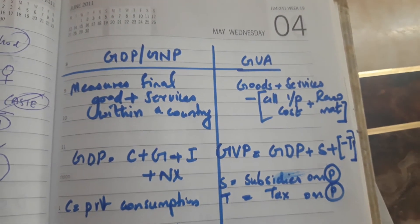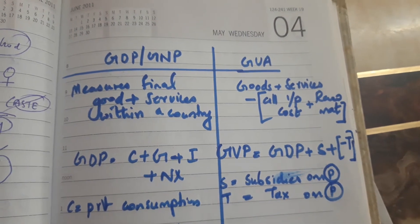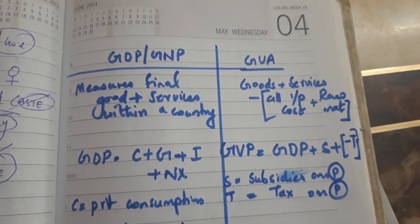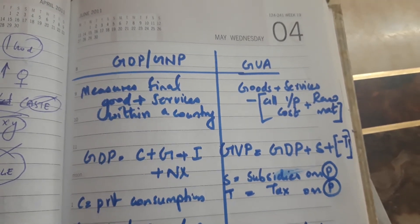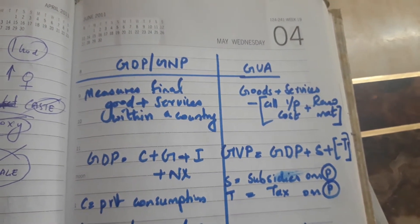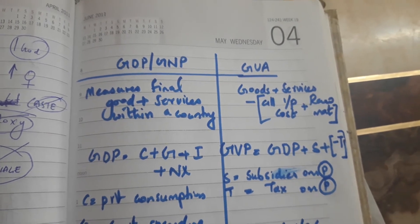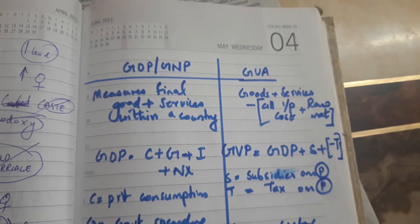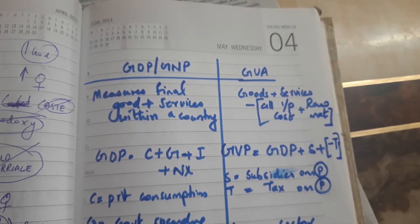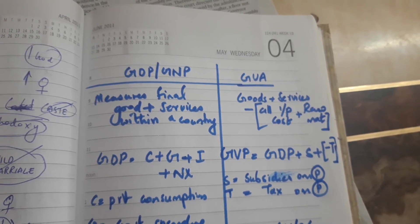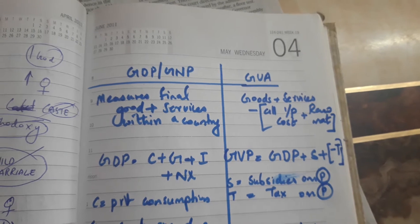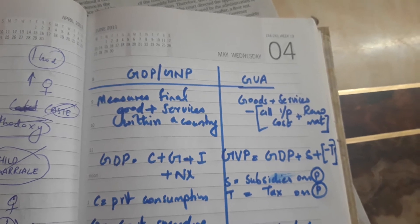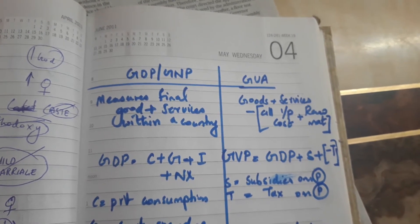In this video we're going to identify the difference between GDP and GVA. GDP is the Gross Domestic Product — it is the sum total of all the goods and services produced within a country. Goods are those produced by industries, like two-wheelers and four-wheelers, and services are those from service-oriented companies like IT companies and educational institutions. This combination of all goods and services produced within a country is called Gross Domestic Product.